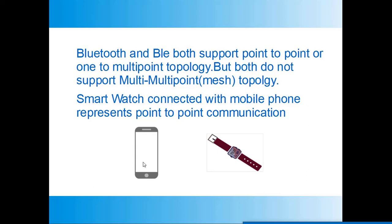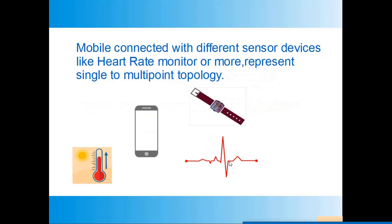Consider the case where a smartphone is connected with a smartwatch — this represents point-to-point communication. In the single-to-multipoint topology, a mobile is connected with a smartwatch, also connected with a heart rate monitor sensor and temperature sensors. We do not see any multipoint-to-multipoint topology using BLE, that is Bluetooth Low Energy, or Bluetooth Classic.